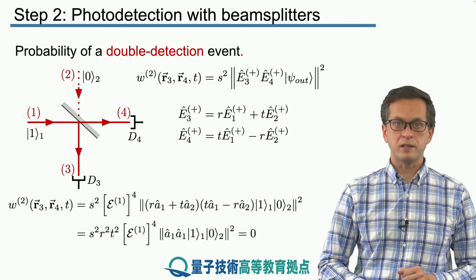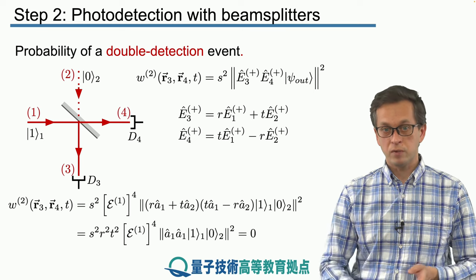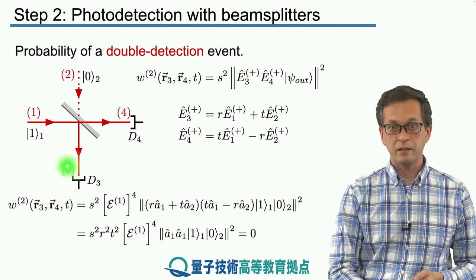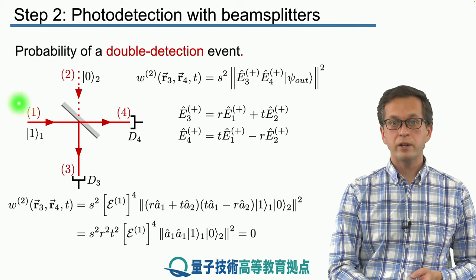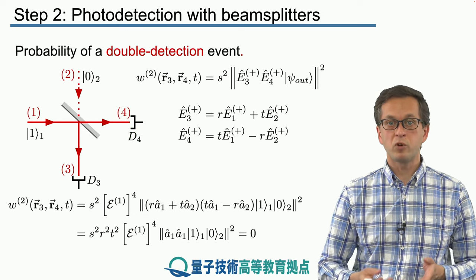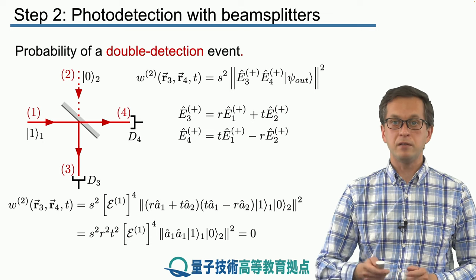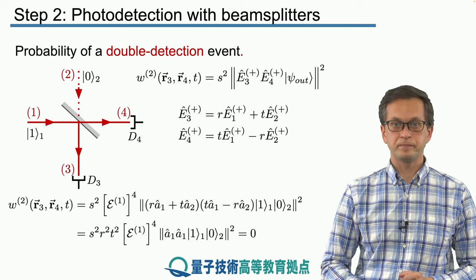And that makes sense. We cannot split a single photon. Either the photon gets reflected and in that case it gets detected by detector D3, or it gets transmitted and it gets detected at D4. It cannot split, so there is no probability that we will get a coincidence detection at D3 and D4 at the same time. We cannot split the number one.